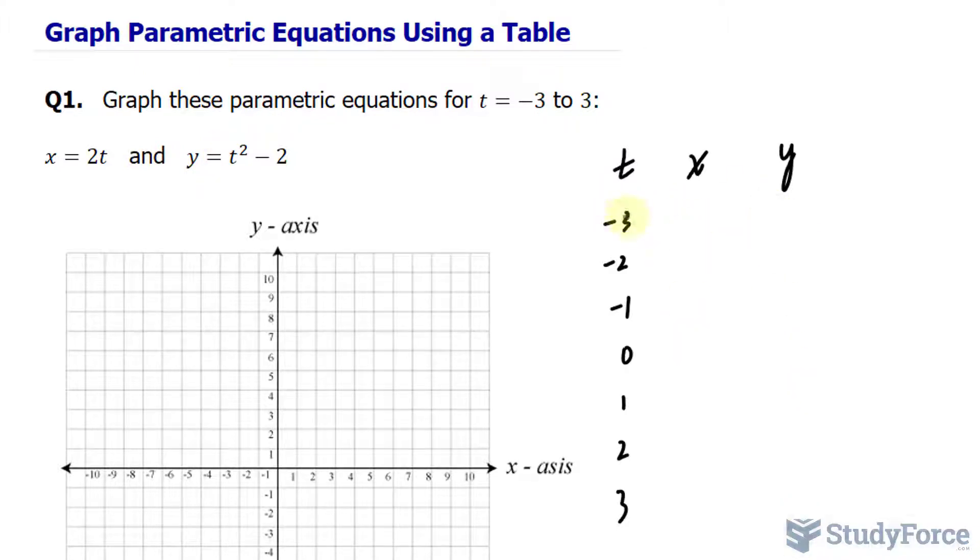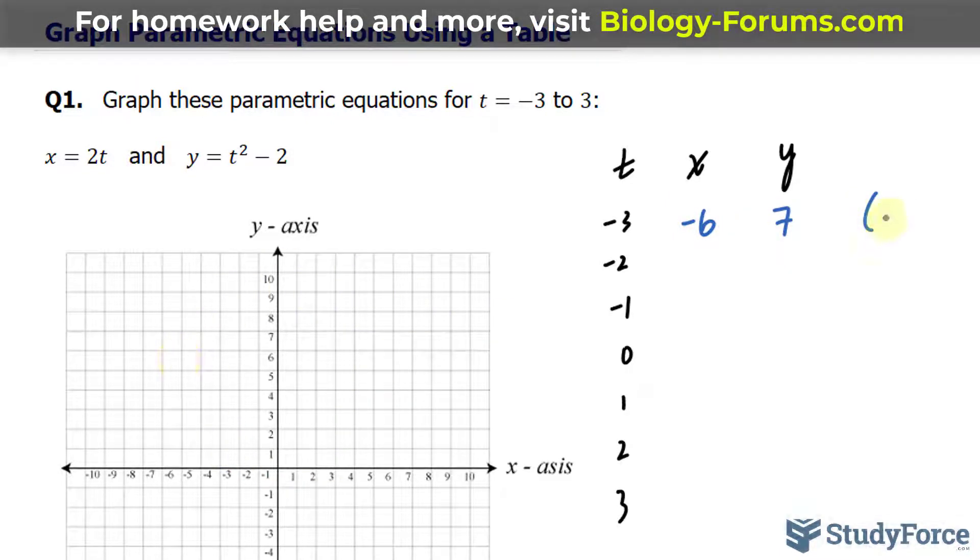For example, if I substitute negative 3 into this equation, I get negative 6. Substituting negative 3 into this quadratic equation, I get 9 minus 2, which is 7. Negative 6 and 7 will be a point on our x, y plane.